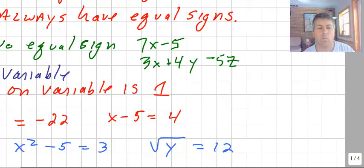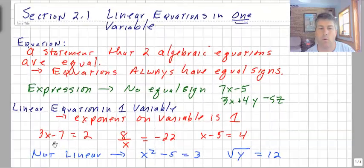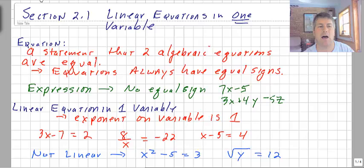We are going to work with linear equations, a special kind of equation: a linear equation in one variable. The exponent on the variable is 1. So our variable here in 3x minus 7 equals 2, the variable is x. The exponent on that variable is 1. We are not showing the 1, but it's there.